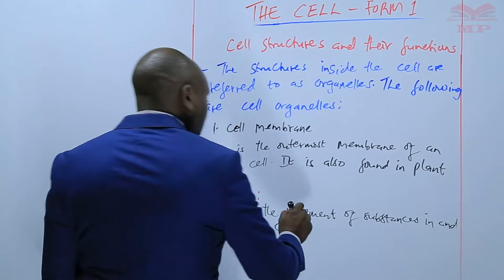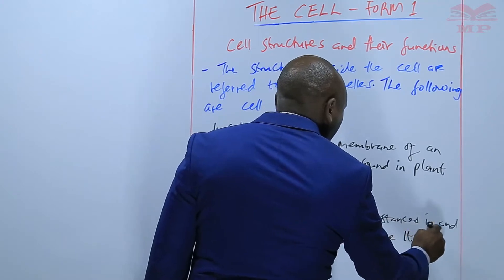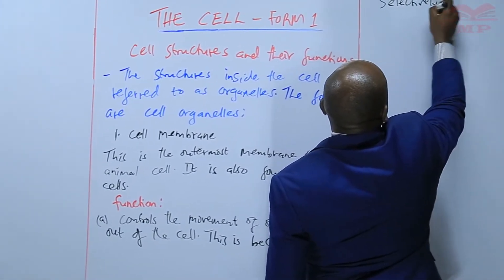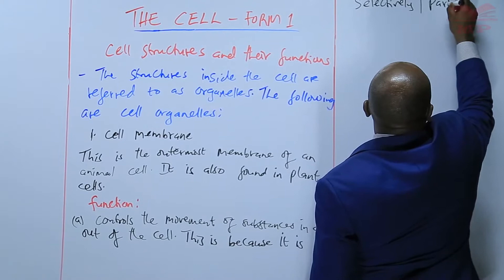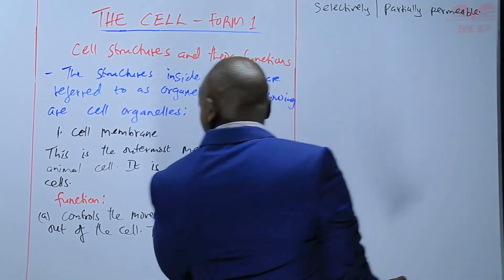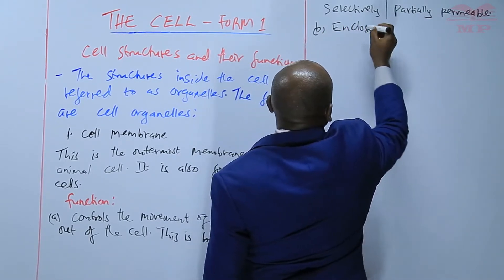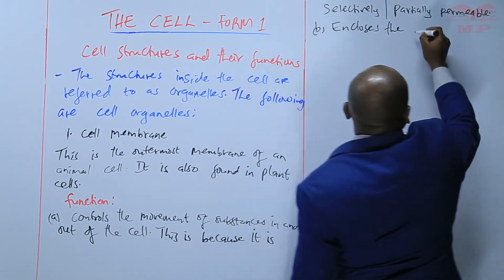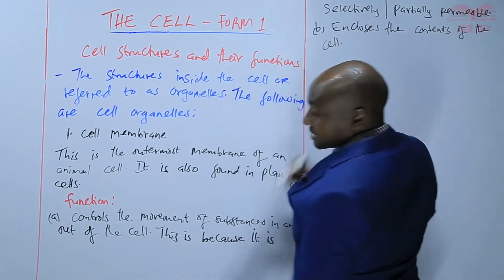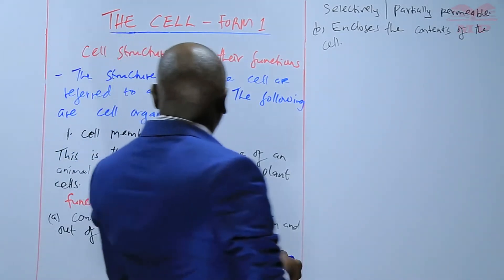The cell membrane controls the movement of substances in and out of the cell because it is selectively permeable — you can also say partially permeable. The second function is that it encloses the contents of the cell. We'll have a diagram of the cell membrane.